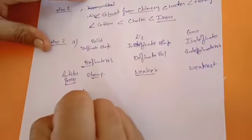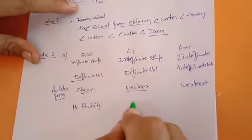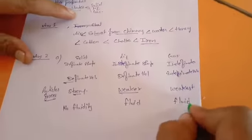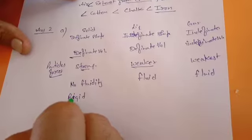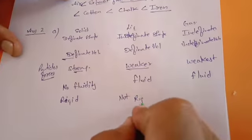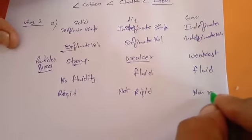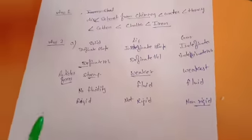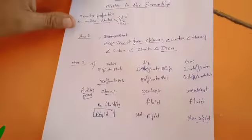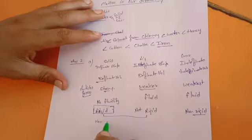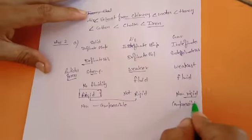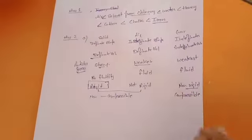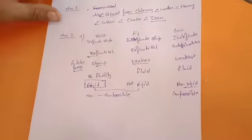Regarding fluidity: solids are not able to flow, while liquids and gases are both considered fluids. For rigidity: solids are rigid substances — they cannot easily change shape by force. Liquids are not rigid, and gases are also not rigid. For compressibility: solids and liquids are non-compressible, but gases are compressible. Note that compressibility and rigidity are completely different concepts.